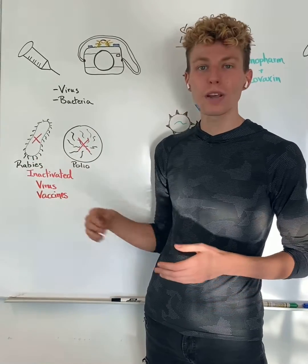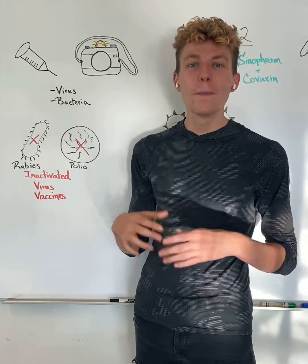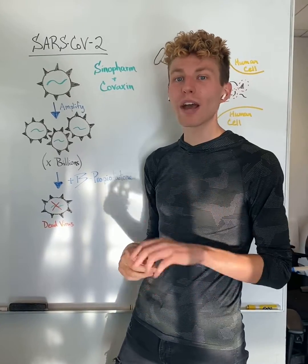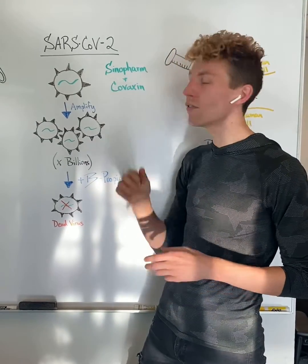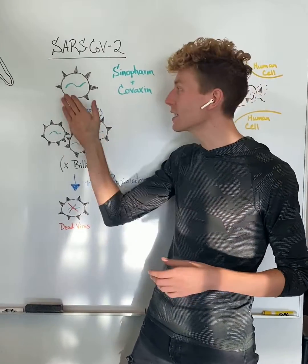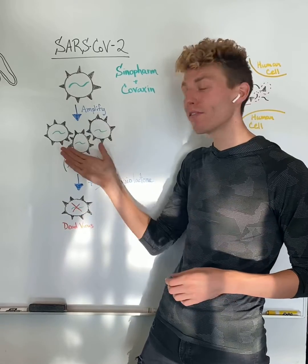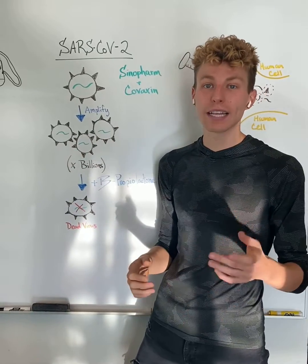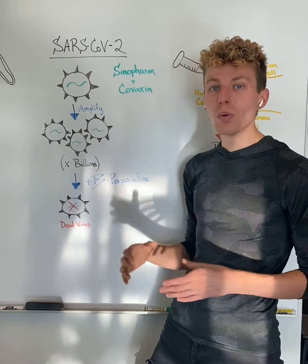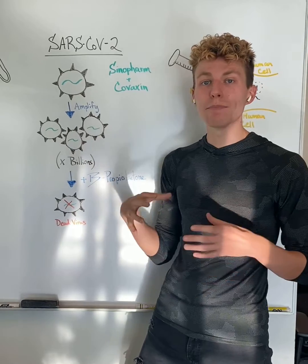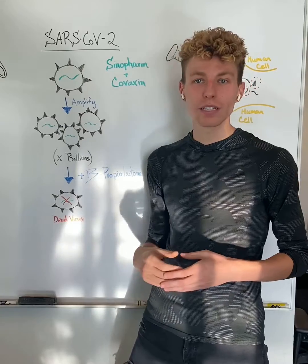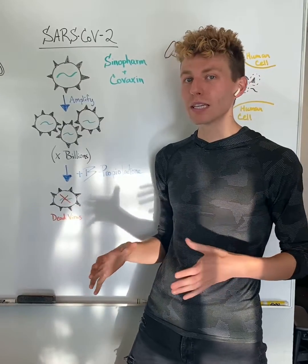This technology has been used before against rabies and polio, but is now being used against SARS-CoV-2, specifically with two vaccines: one manufactured in China known as Sinopharm, and one manufactured in India known as Covaxin. They isolated the SARS-CoV-2 virus and amplified it in culture. They then treated the virus with a drug called beta-propiolactone, which enters the virus and binds to the genetic material to inactivate it, creating a dead virus but leaving the proteins completely intact.